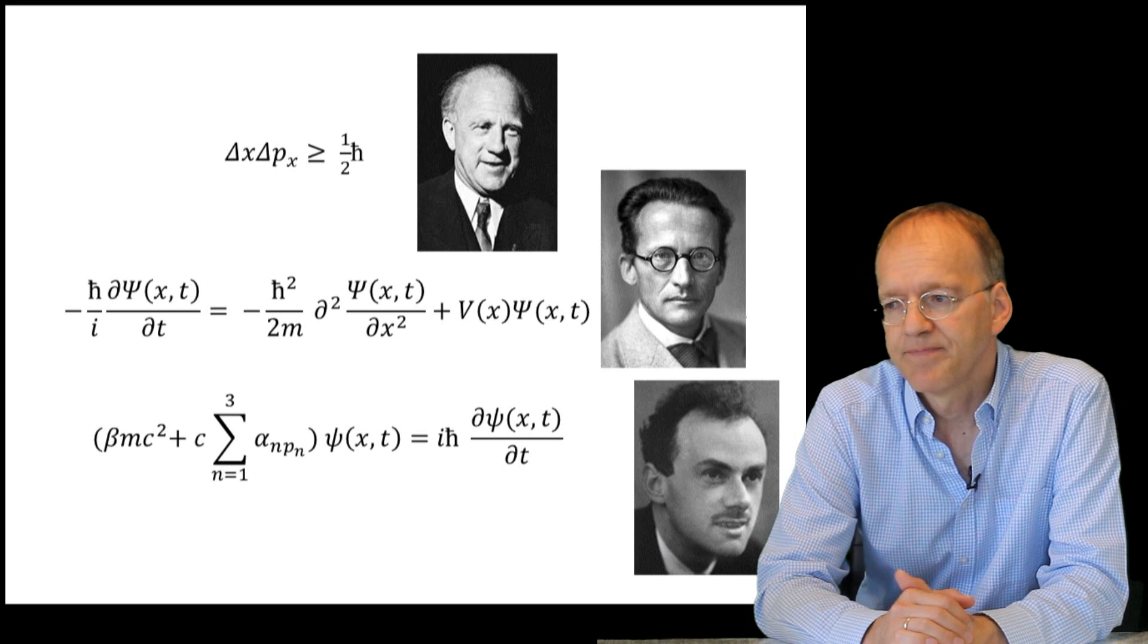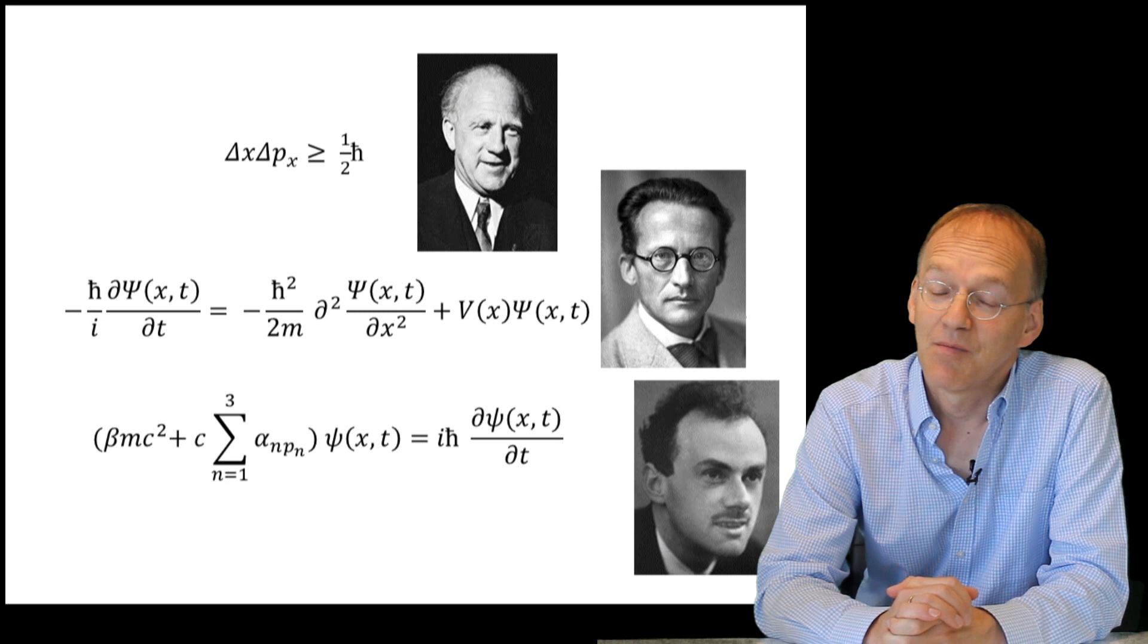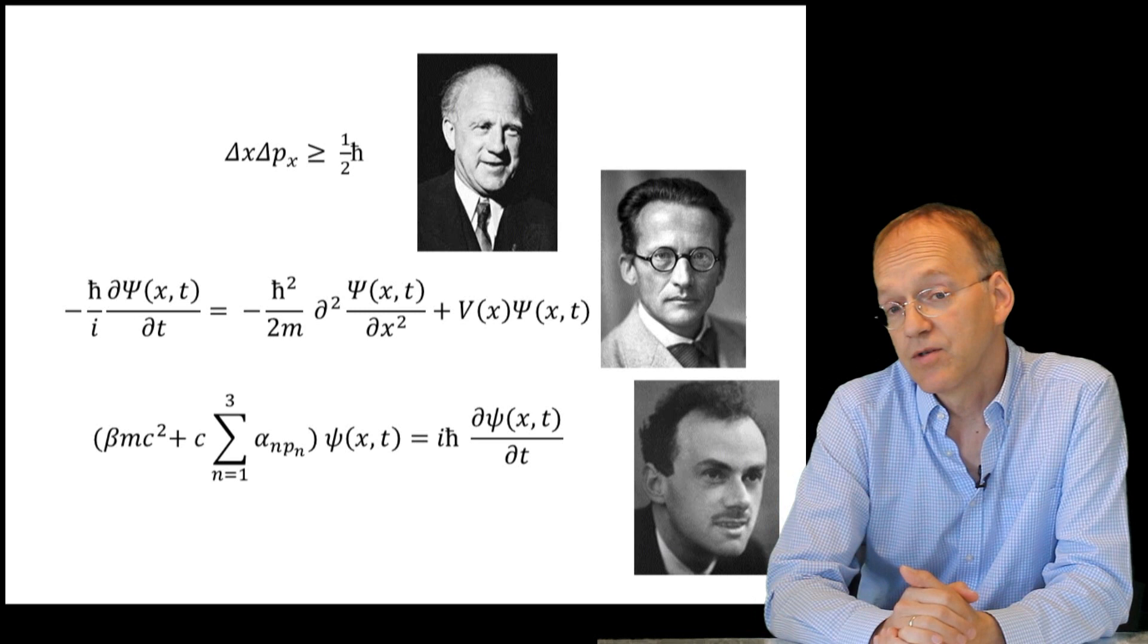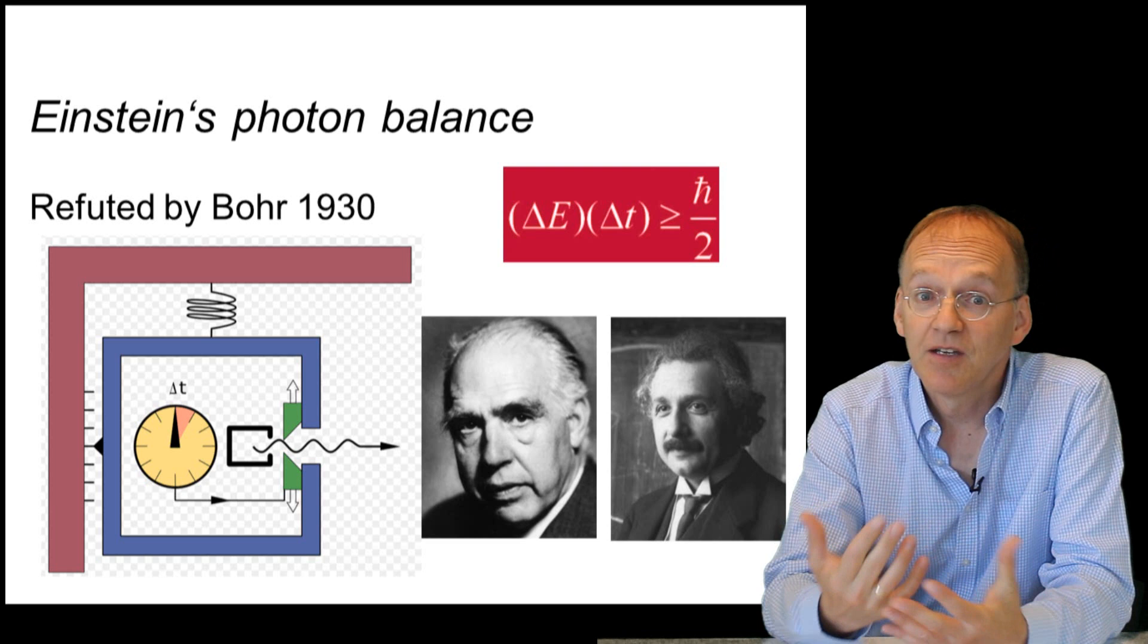Sometimes Pauli and Heisenberg mocked Bohr's lack of mathematical capabilities, but without him their own work would not have been possible. Bohr in turn defended Heisenberg's most important finding, the uncertainty principle, against the continuing criticism of Albert Einstein.